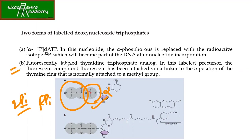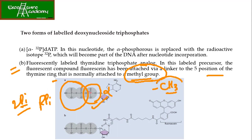The second method is fluorescently labeled thymidine triphosphate analog. Here we are not using dTTP itself — we are using the analog. In this, a labeled precursor where the fluorescent compound fluorescein has been attached via a linker to the fifth position of the thymine ring, which is normally having the methyl group. So it's methyl group ke jagah — instead of this methyl group, we are having the fluorescent group.